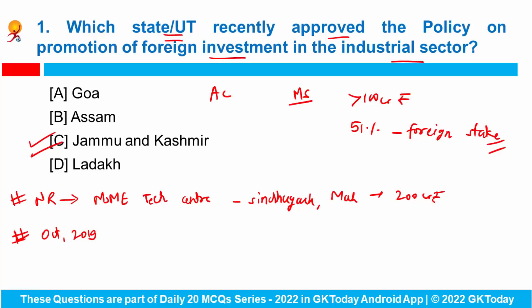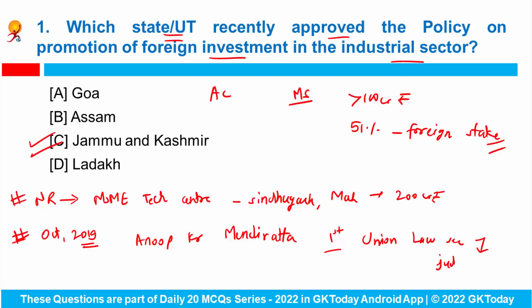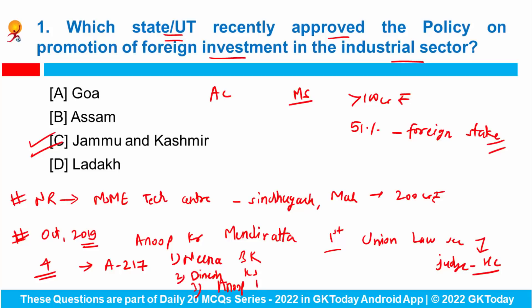Apart from it, in October 2019, Anoop Kumar Mendiratta became the first serving judge to be appointed as Union Law Secretary. Recently, he became the first Union Law Secretary to be appointed as a judge in the High Court. The President of India has appointed four persons as judges of Delhi High Court under Article 217 of the Indian Constitution: Nina Bansal Krishna, Dinesh Kumar Sharma, Anoop Kumar Mendiratta, and Sudhir Kumar Jain.